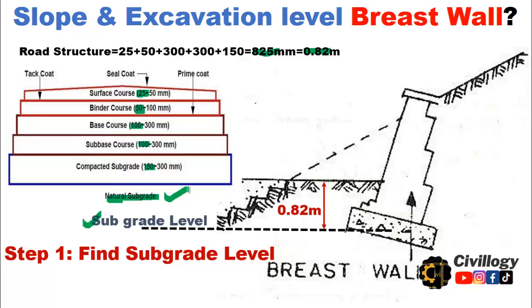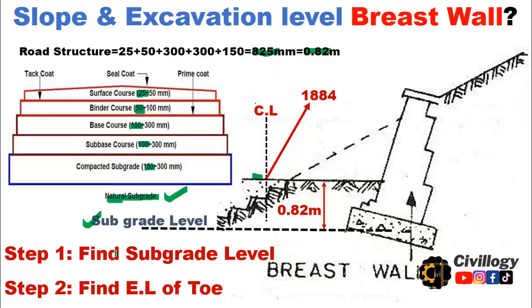So the breast wall has to be laid on natural ground to make it more stable. The subgrade level is 0.82 meters below the finished road level. The center line of the road is taken as reference for all types of excavations in a road construction project. Step 2 is to find the elevation level (EL) of the toe — that is, the excavation level of the toe.